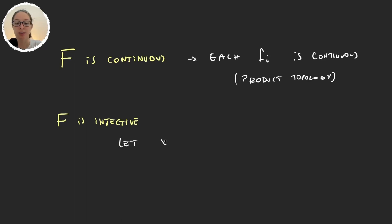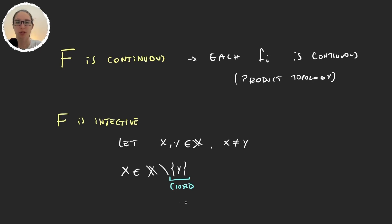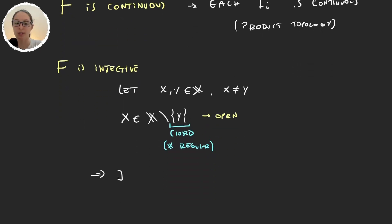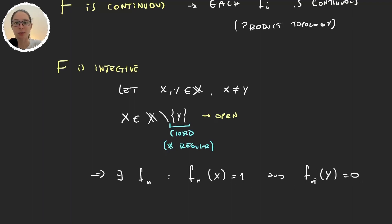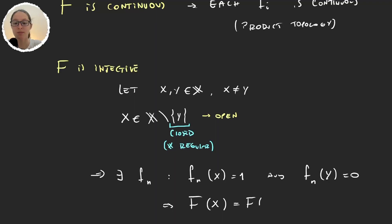Next we prove f is injective. Take x ≠ y in X. Then x belongs to X \ {y}, and {y} is closed since the space is regular (T1). So X \ {y} is open, and by construction there exists some fₙ in the sequence with fₙ(x) = 1 and fₙ(y) = 0. Since at least one coordinate differs, f(x) ≠ f(y), so f is injective.